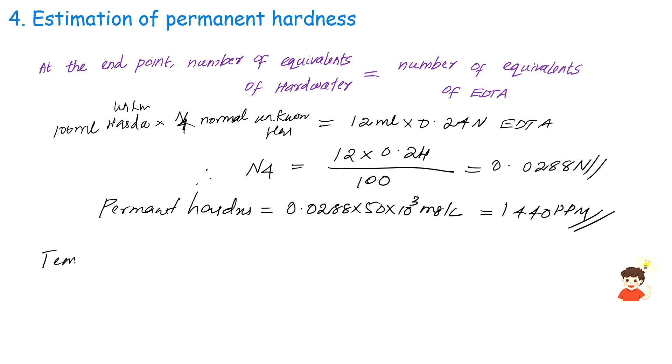And the equation: total hardness minus permanent hardness. That is equal to 2160 minus 1440. And the answer is 720 mg per liter or ppm. That's the answer.